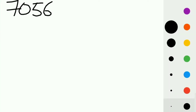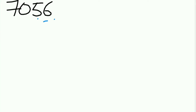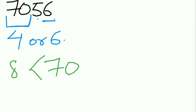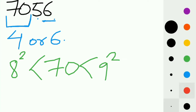Now let us try finding the square roots of a few numbers. Let's say 7056. If we look at the last digit of this number, which is 6, we can clearly say the last digit of the square root will be 4 or 6. Now let's take a look at the first two digits, which is 70, which is greater than the square of 8 and smaller than the square of 9. So the first digit will be 8.